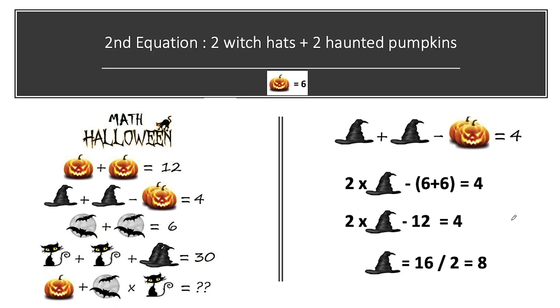Now jumping on to our second equation. In the second equation we have 2 witch hats and 2 haunted pumpkins. And the equation value is equal to 4. Friends, we know value of haunted pumpkin, putting the value here in this equation and solving this equation to get the value of witch hat.